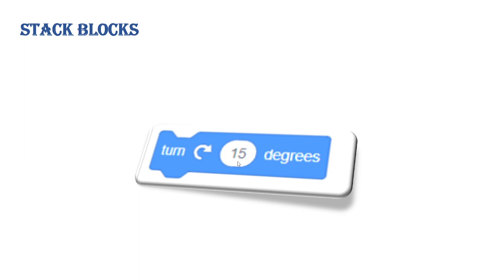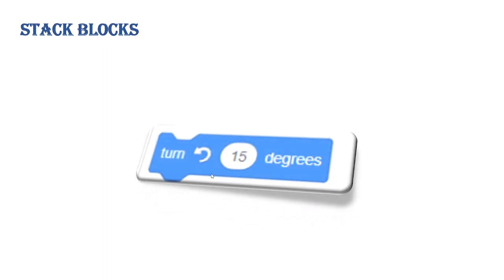The turn right block is used to change the sprite direction toward the right by the degree value given by the programmer. The default degree value is 15, which you can change as needed. Similarly, the turn left block turns the sprite toward the left by the degree value given by the programmer. By default its value is also 15, and you can change it as per your requirement.